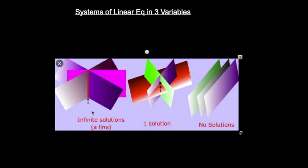Obviously, that can happen in many ways — three planes intersecting in different ways. There are three cases that can happen with a system of linear equations in three variables, just as with two. You have one solution, no solutions, or infinite solutions. There's no such thing as just two or three solutions — it's either one, zero, or infinite.